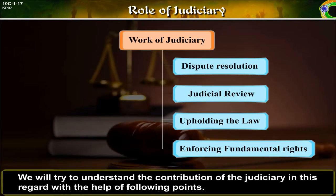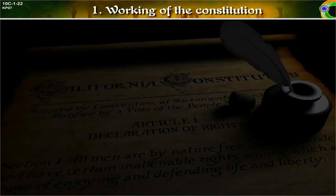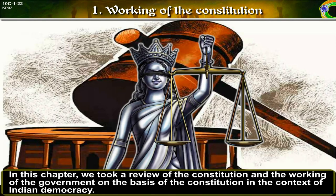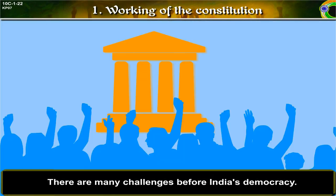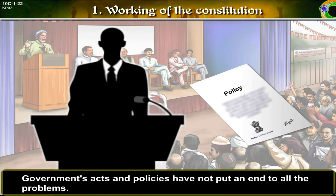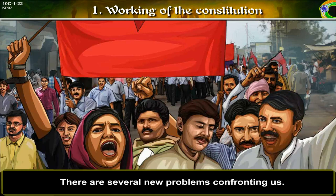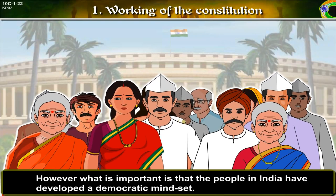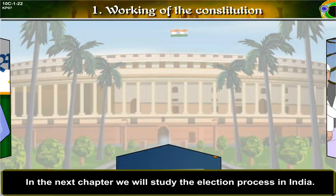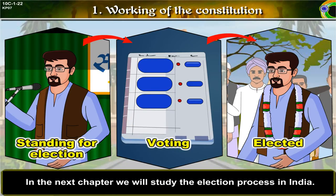We will try to understand the contribution of the judiciary with the help of the following points. In this chapter, we took a review of the Constitution and the working of the government on the basis of the Constitution in the context of Indian democracy. There are many challenges before India's democracy. Governments' acts and policies have not put an end to all of the problems, and there are several new problems confronting us. However, what is important is that the people in India have developed a democratic mindset. In the next chapter, we will study the election process in India.